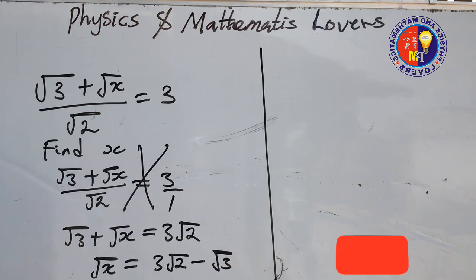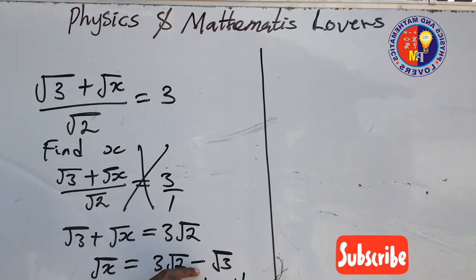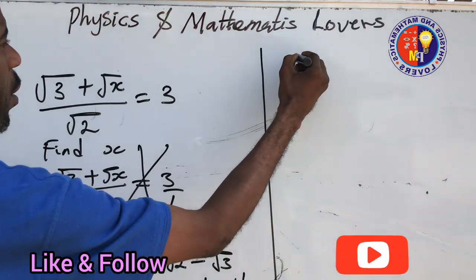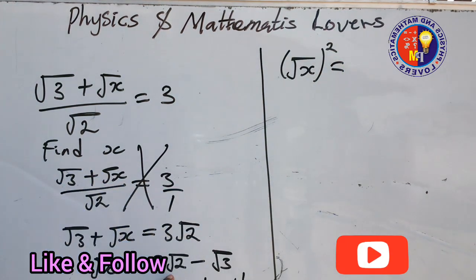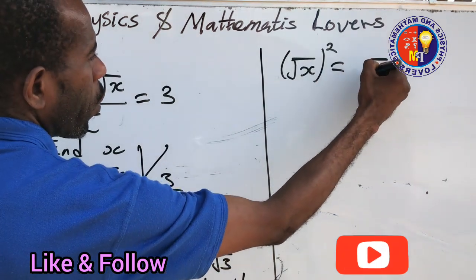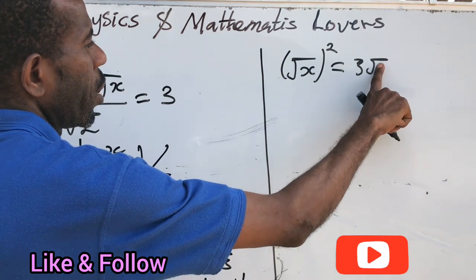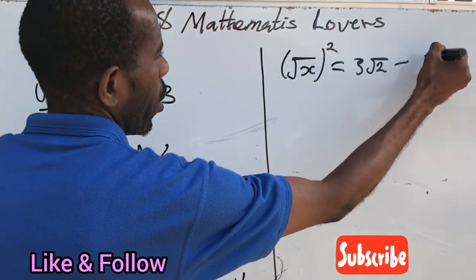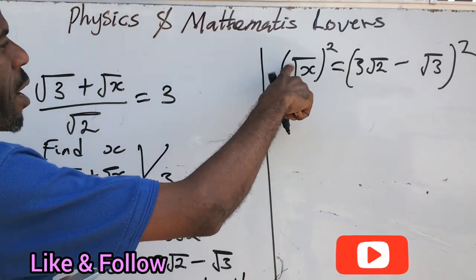Now we need to remove the root on the left side. We do that by squaring both sides. So root x squared equals 3 root 2 minus root 3, all squared. The essence of squaring is to eliminate the radical, so the left side gives us simply x.